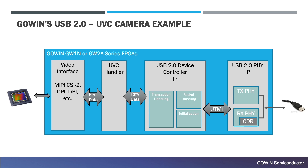This can be replaced with a video interface such as MIPI CSI-2, MIPI DPI, or MIPI DVI to provide the image sensor interface, directly streaming camera or image sensor data through a USB 2.0 pipeline.